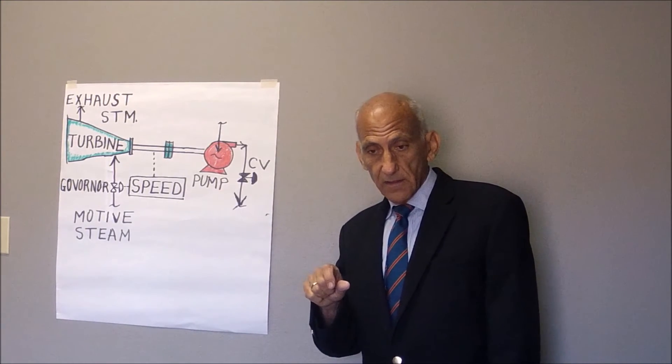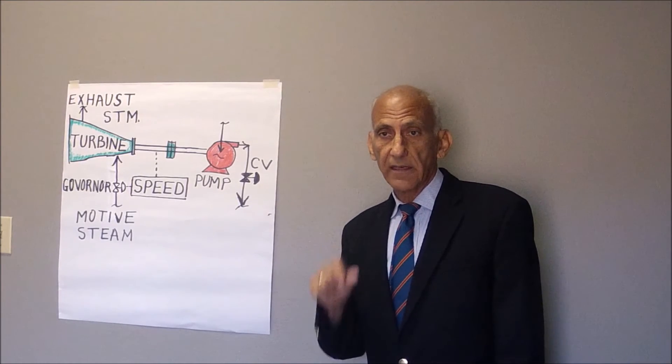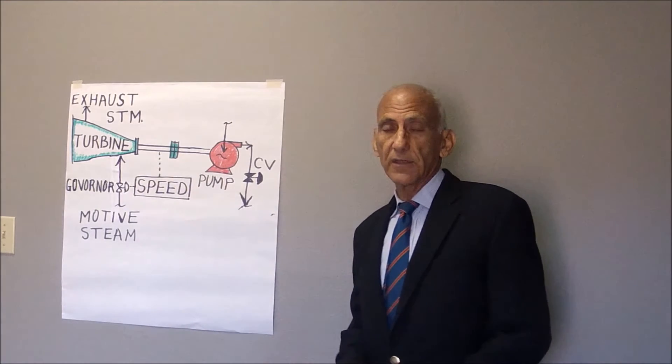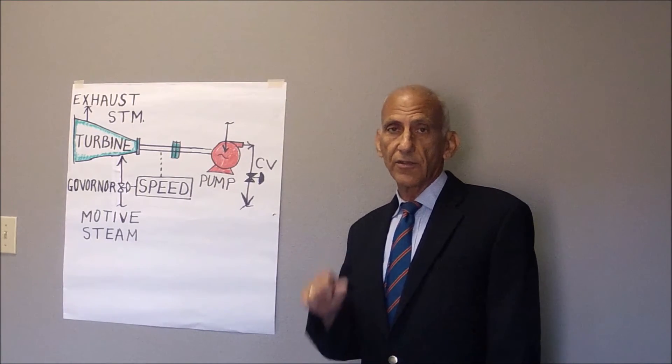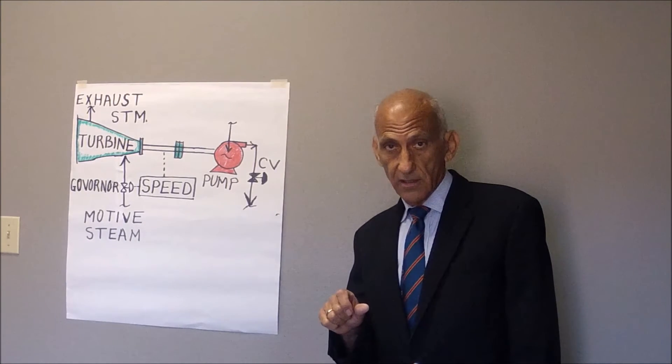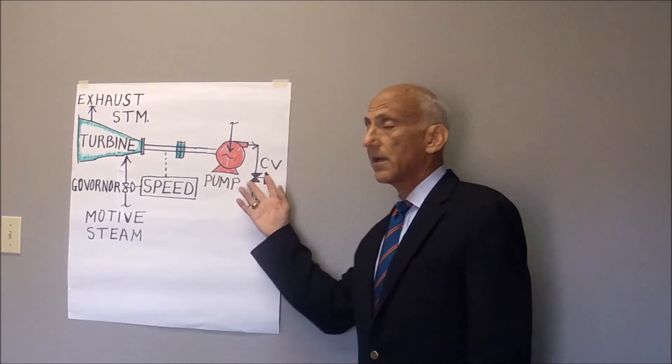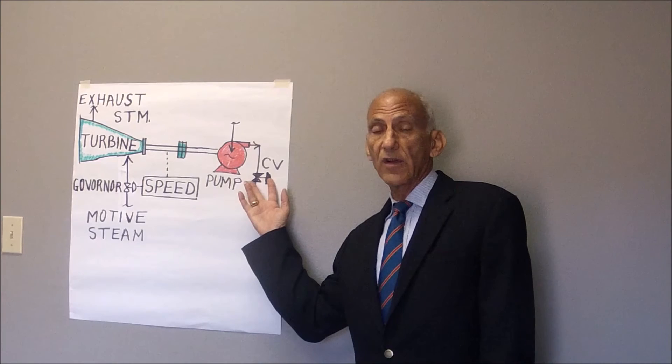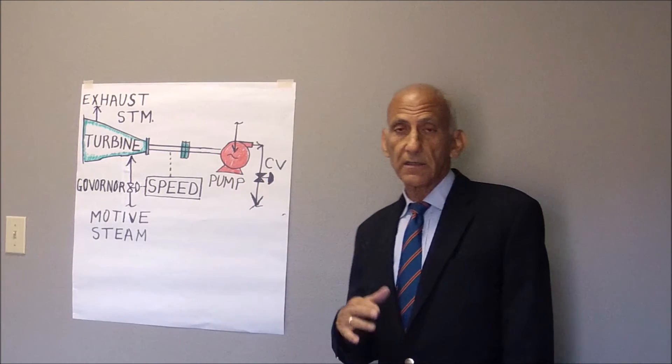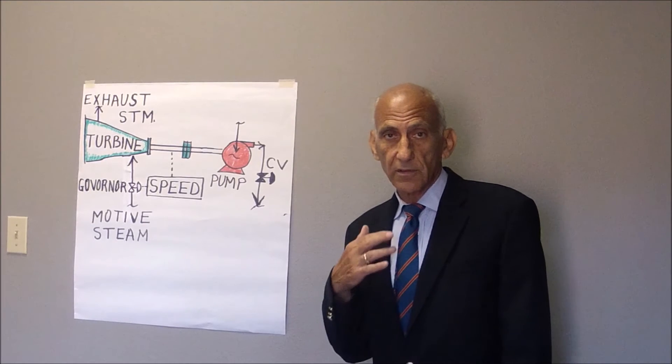You slow the turbine down, the governor's speed control valve will now start to close, and the control valve on the discharge of the pump will start to open.